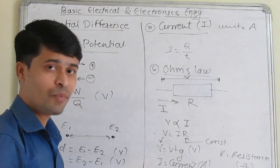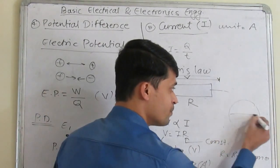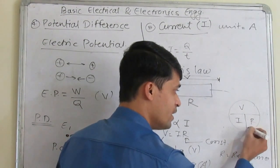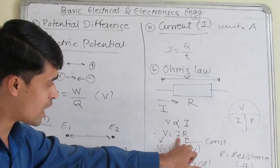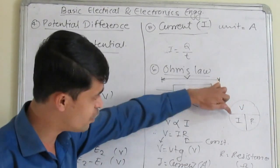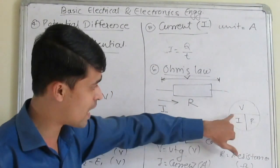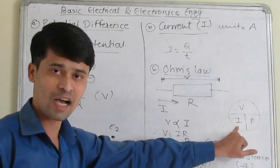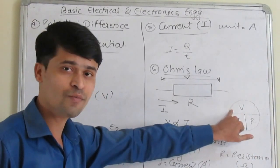How do we simply remember Ohm's law? V is equal to IR, I is equal to V upon R, and R is equal to V upon I. This is the simple way to remember Ohm's law.